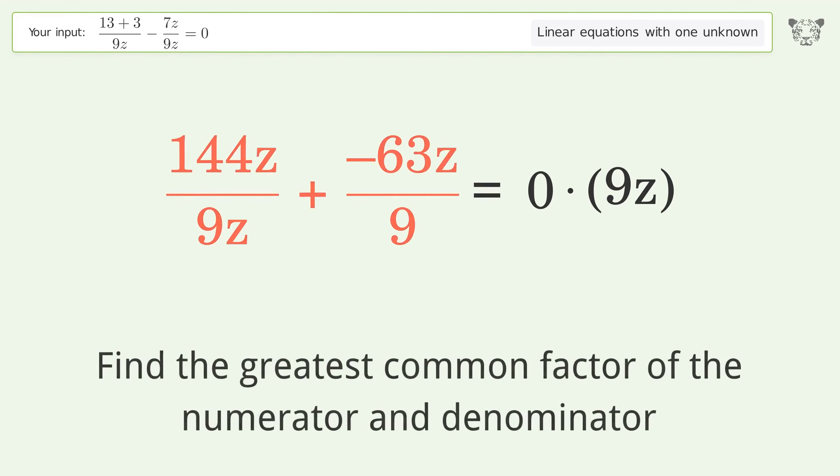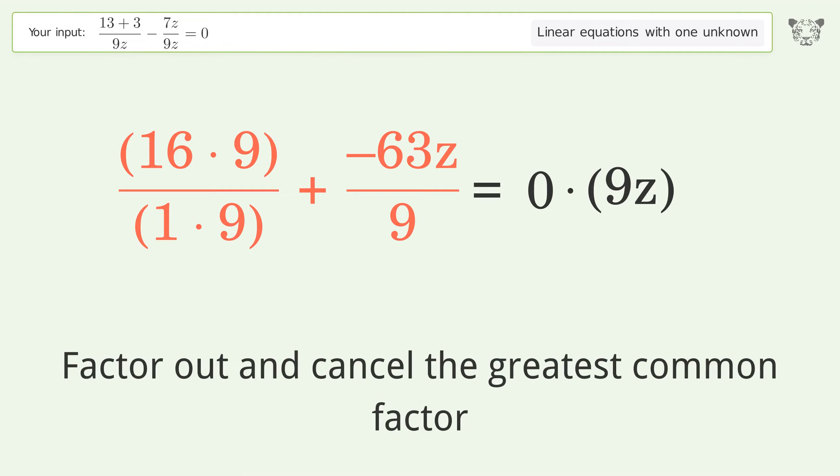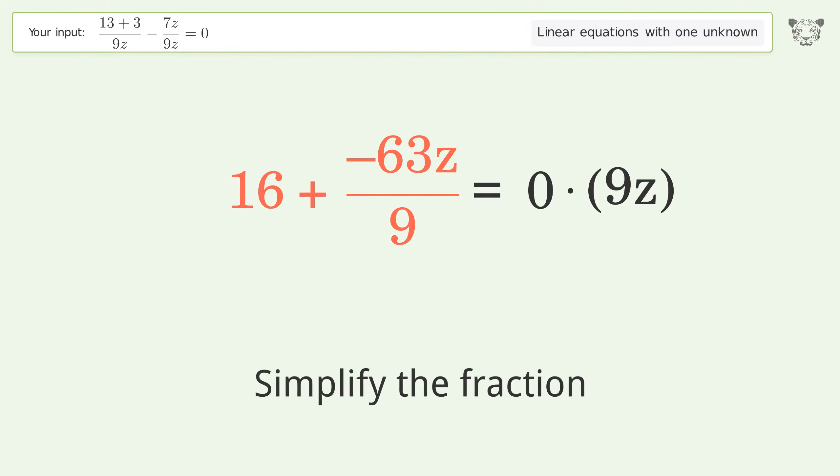Find the greatest common factor of the numerator and denominator. Factor out and cancel the greatest common factor. Simplify the fraction.